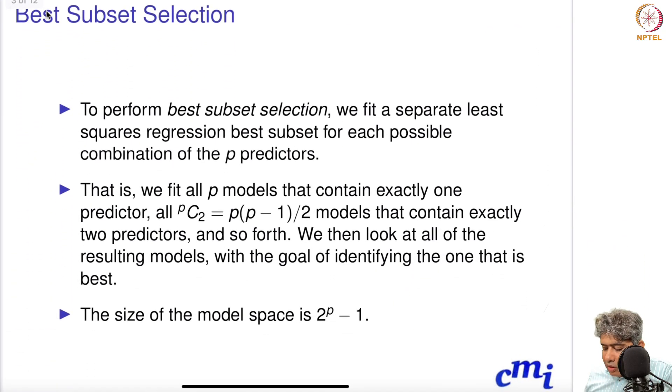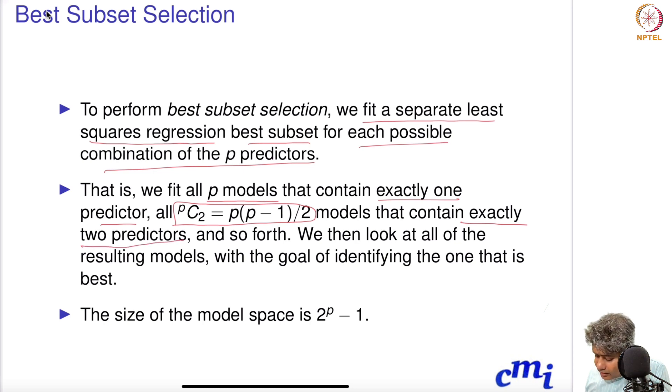The first thing I will talk about is best subset selection. To perform best subset selection, we fit a separate least squares regression for each possible combination of the p predictors. This will fit all p models that contain exactly one predictor, then all p choose 2 models that contain exactly two predictors, and so forth.